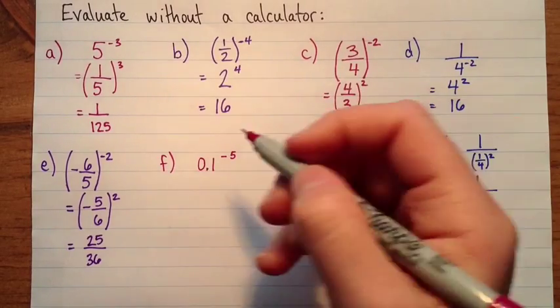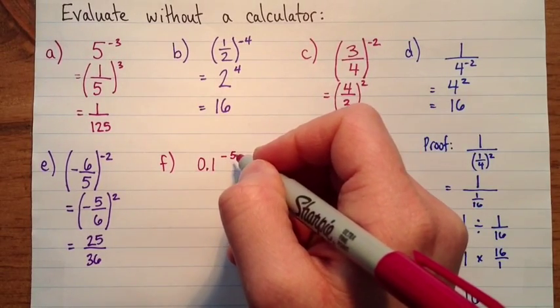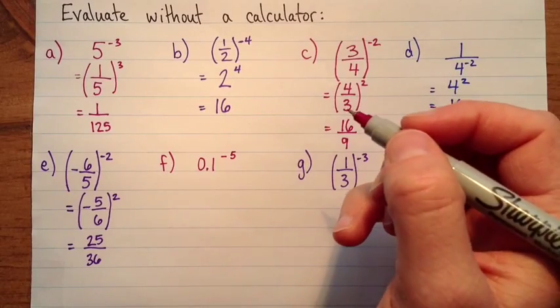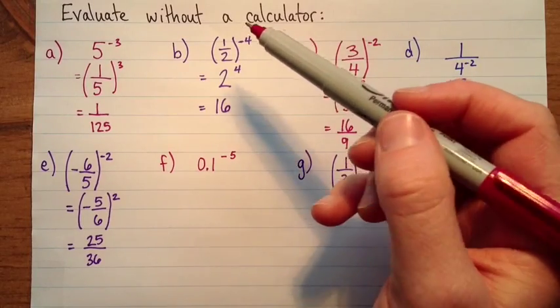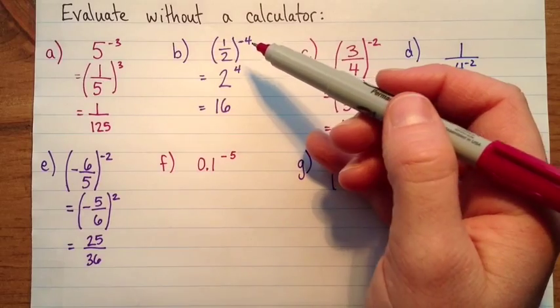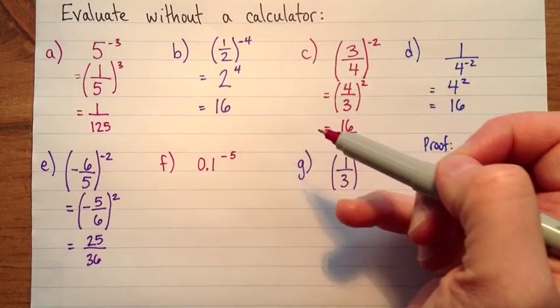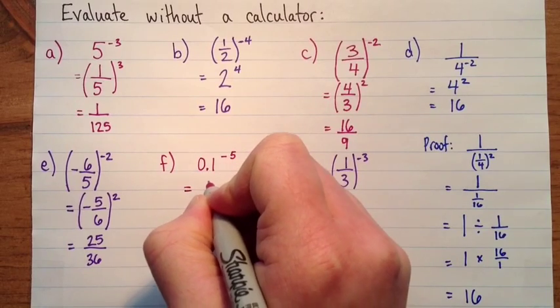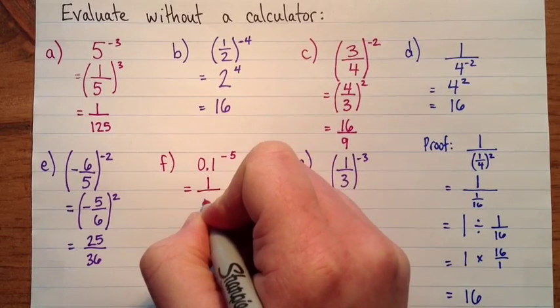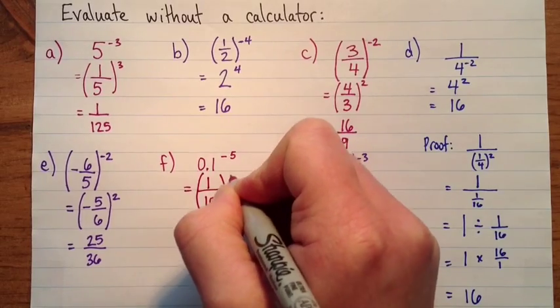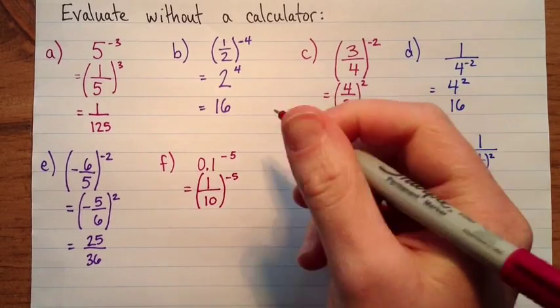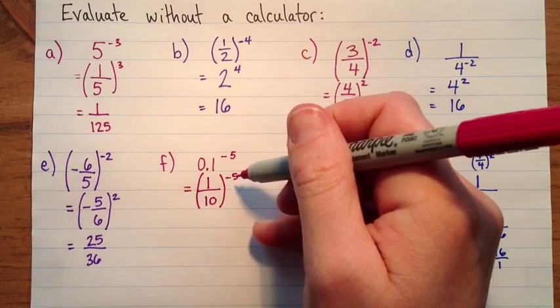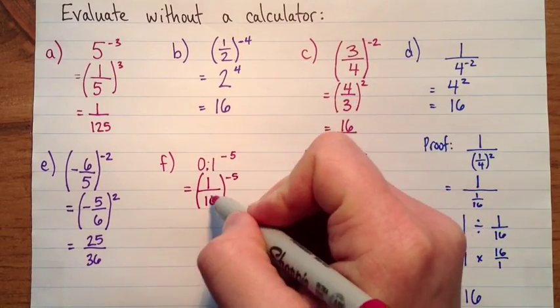Okay, this one looks a little bit different. It's 0.1 to the exponent negative 5. Powers are one of the times when it's much easier to deal with fractions than it is to deal with decimal numbers. So let's change this right away. 0.1 is one tenth. That's one tenth to the exponent negative 5. So I haven't done anything to the exponent yet. I've just changed my decimal to a fraction.